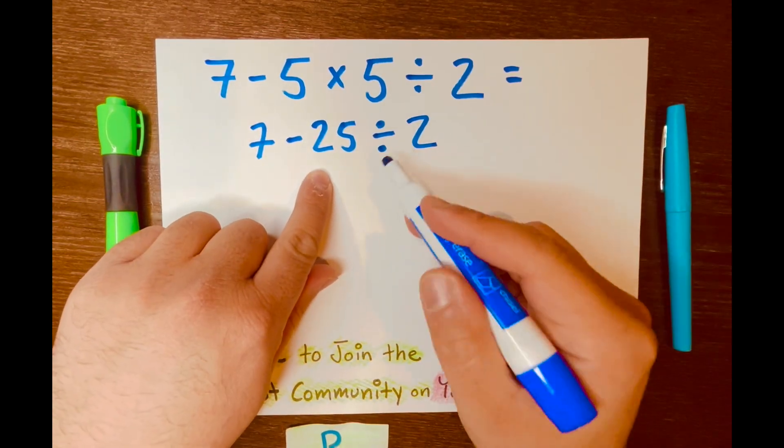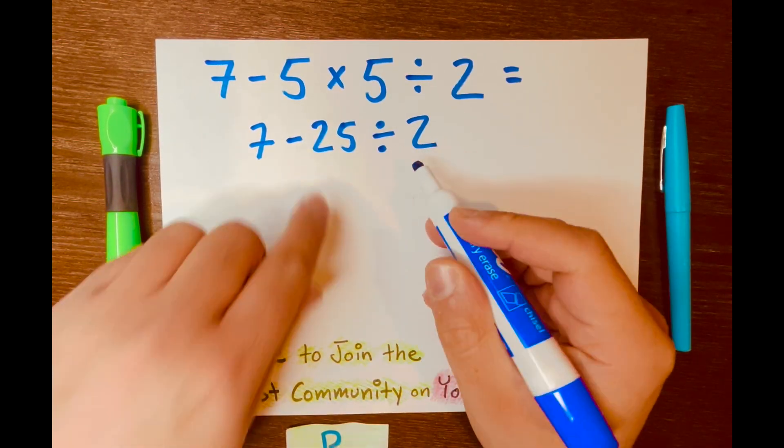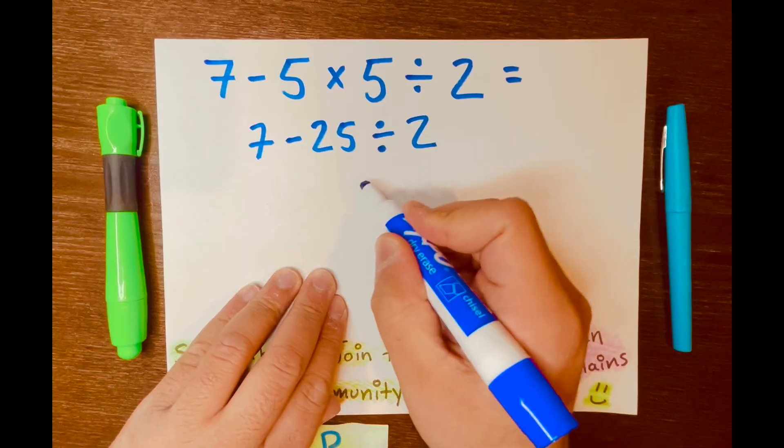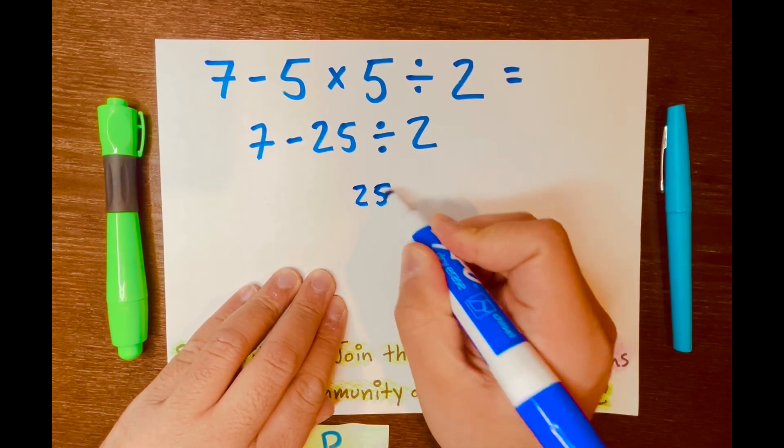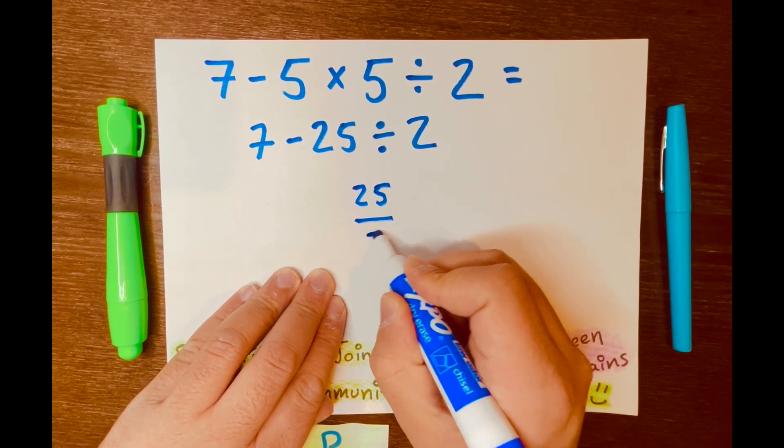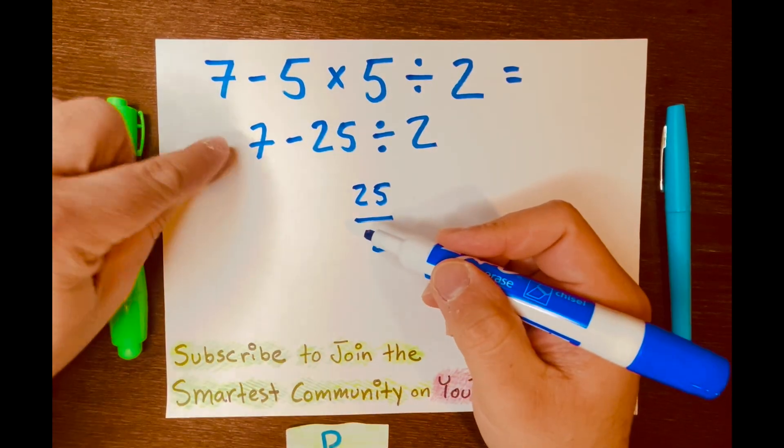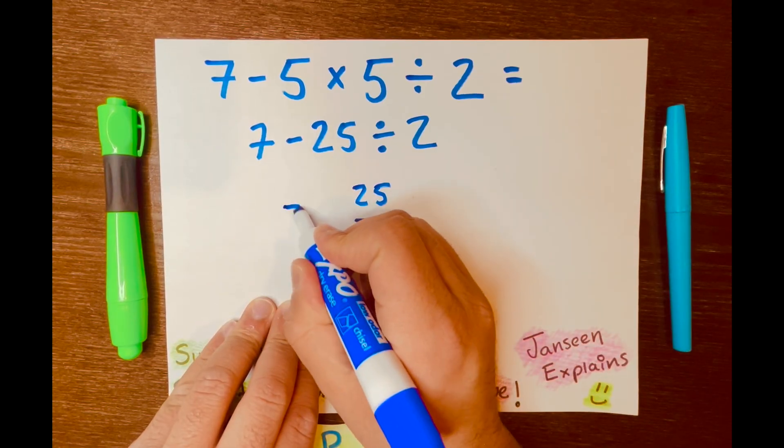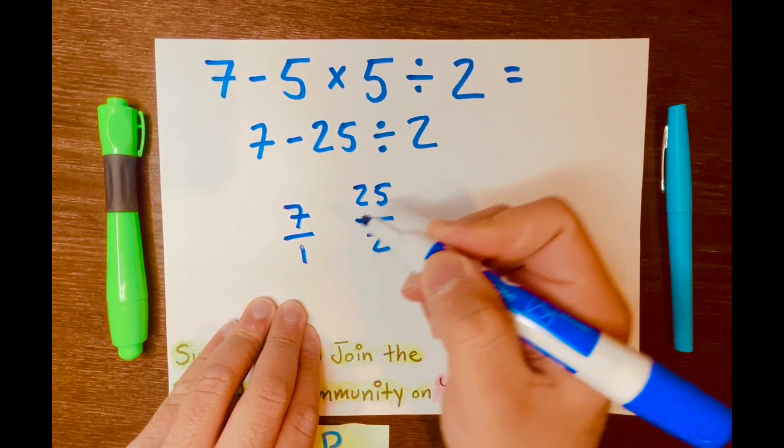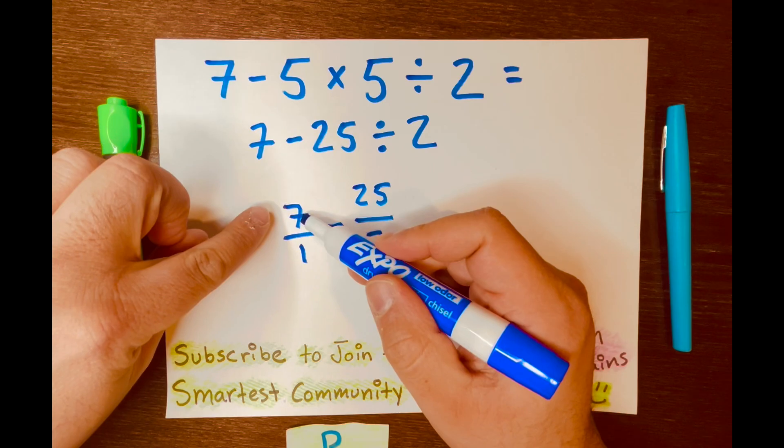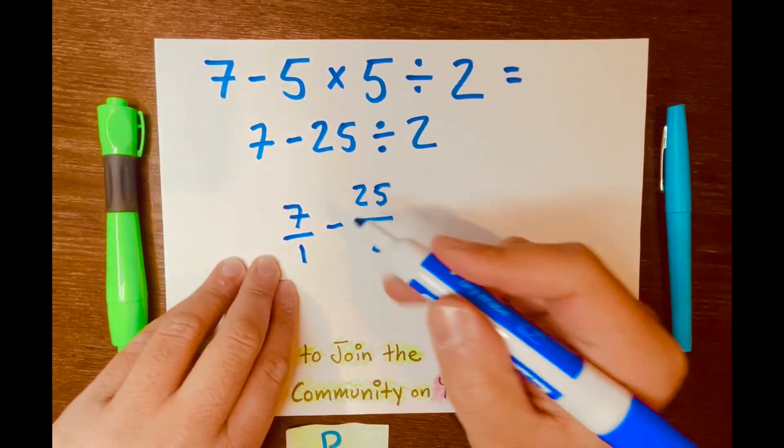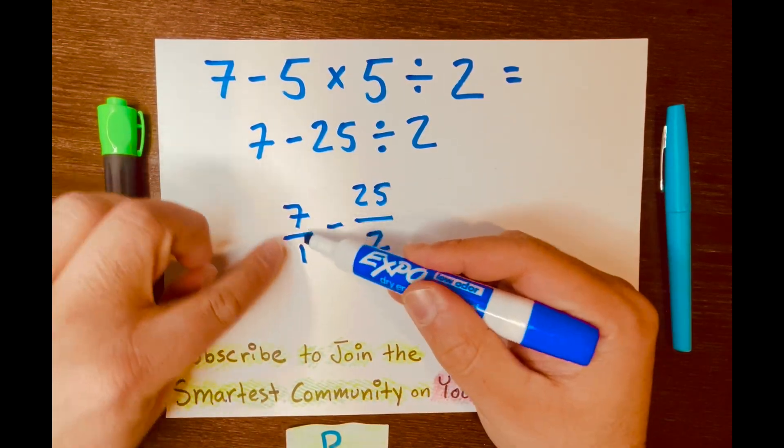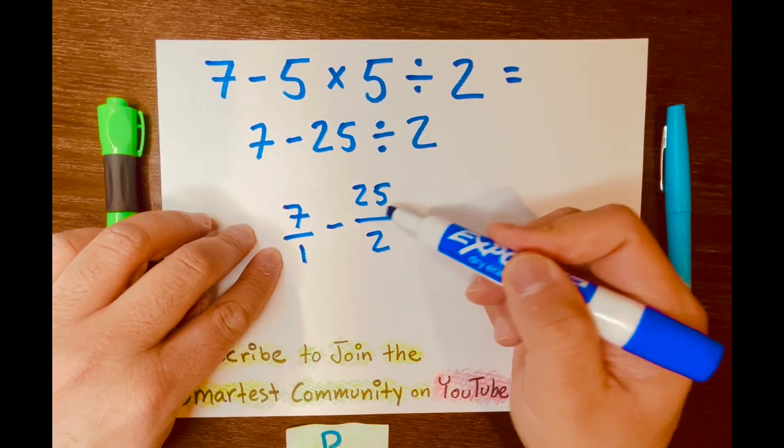So we're going to write 25 divided by 2 in fraction form, 25 over 2. And then bring down the 7 in fraction form to make the math easy. So I'll write it 7 over 1, and we all know 7 over 1 equals 7, does not change. So now we're looking at 7 over 1 minus 25 over 2.